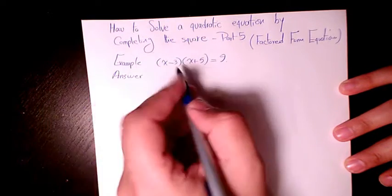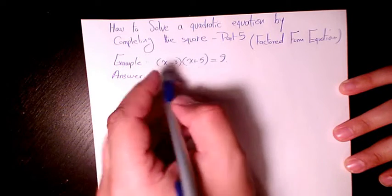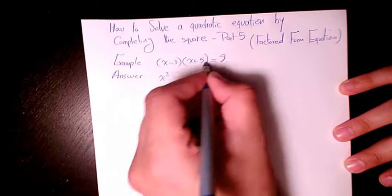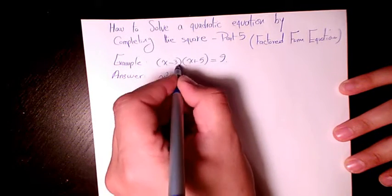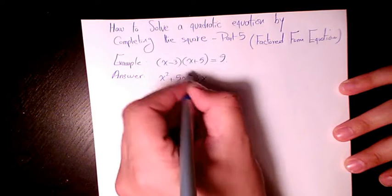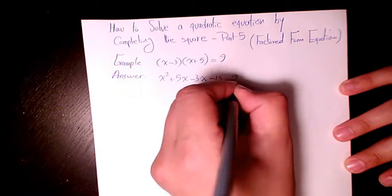So the first step we need to do, we need to expand this one. X times x is x squared. X times 5 is 5x. Negative 3 times x is negative 3x. Negative 3 times 5 is negative 15 equals to 9.